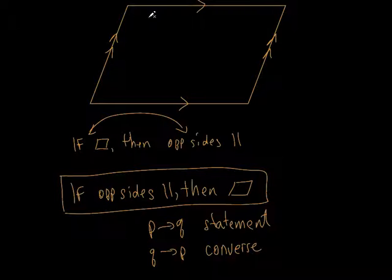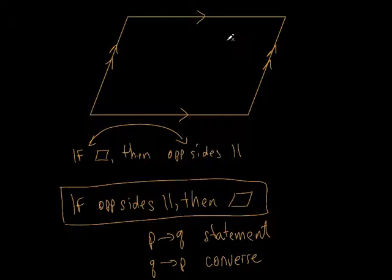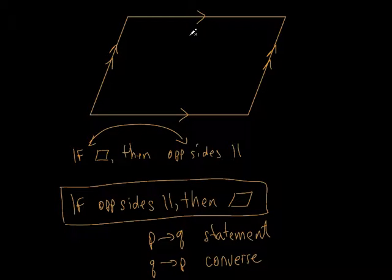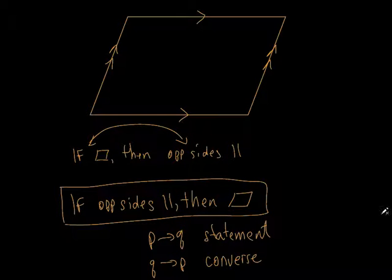We didn't know it was a parallelogram to begin with. The only thing we knew is that the opposite sides were both parallel to each other. But if that's true, guess what this thing is? It's a parallelogram. And since it's a parallelogram, the opposite sides are also equal, opposite angles are equal, consecutive interior angles are supplementary, and the diagonals bisect each other.